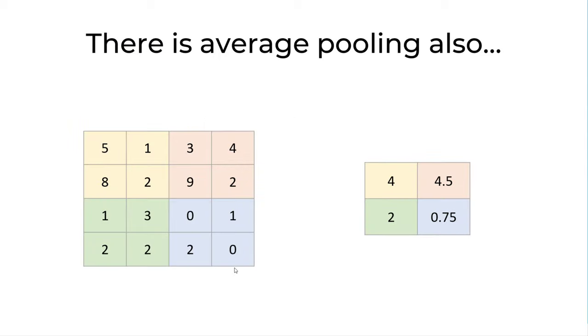There is average pooling also. Instead of max, you just make an average. 5 and 1, 6 and 2, 8. 8 and 8, 16. 16 divided by 4 is 4. But max pooling is more generally used. But sometimes people use average pooling also.